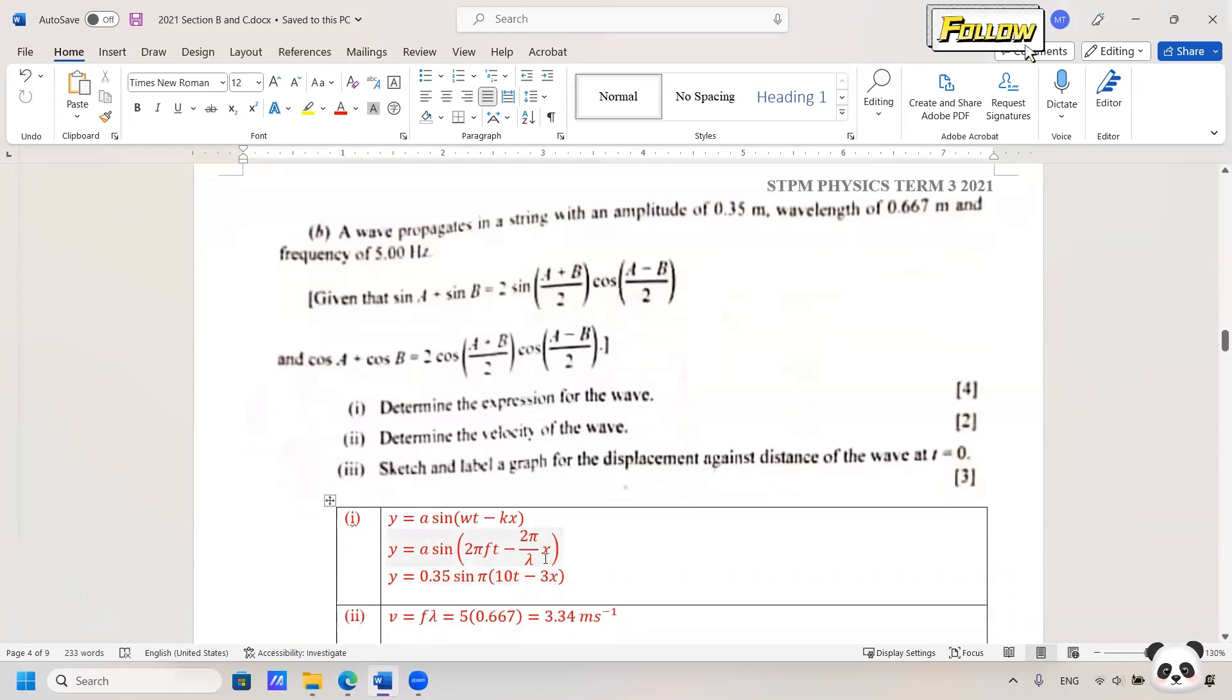Put in all the values and the expression for the wave should be equal to 0.35 sin π(10t - 3x). The next one is to determine the velocity of the wave: v equals f lambda. So f and lambda are given, just put in the values and the answer is 3.34 meters per second.